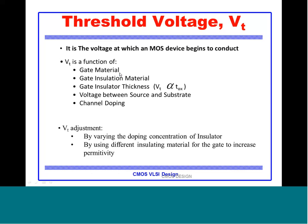What does VT depend on? It depends on the gate material (usually polysilicon), the gate insulation material (most commonly silicon dioxide), the gate insulator thickness, and the voltage between source and substrate. We have been assuming source and substrate both at 0 for the ideal IV equations. VT is also a function of the voltage difference between source and substrate, and of channel doping.